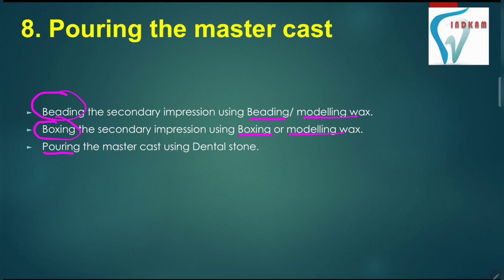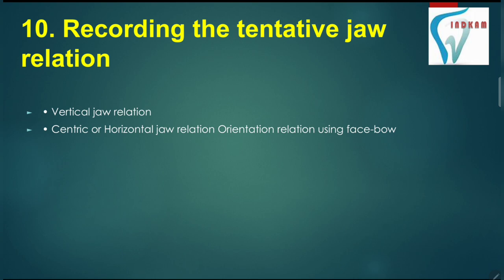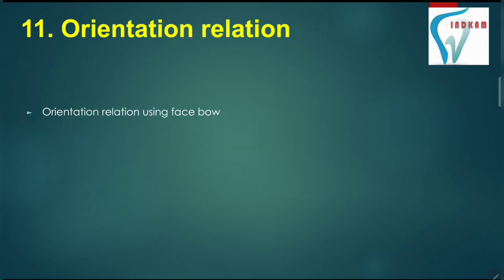The material used for making the master cast is dental stone. Once the master cast is prepared, we will make a temporary denture base. For making the temporary denture base, we will use shellac or acrylic material and fabricate the occlusal rims over that using modeling wax. Once the denture base is made, we will record the tentative jaw relation — vertical jaw relation, centric or horizontal jaw relation, and orientation relation using a face bow.